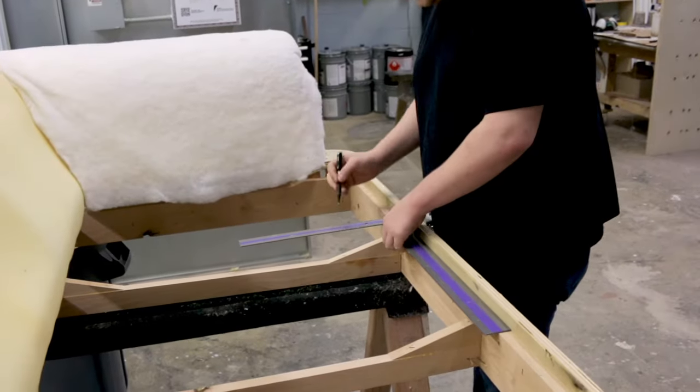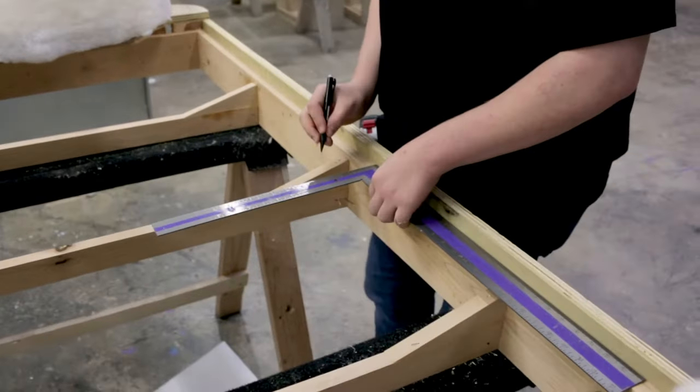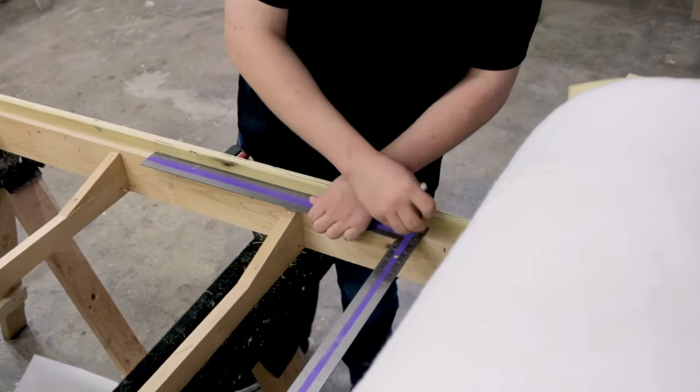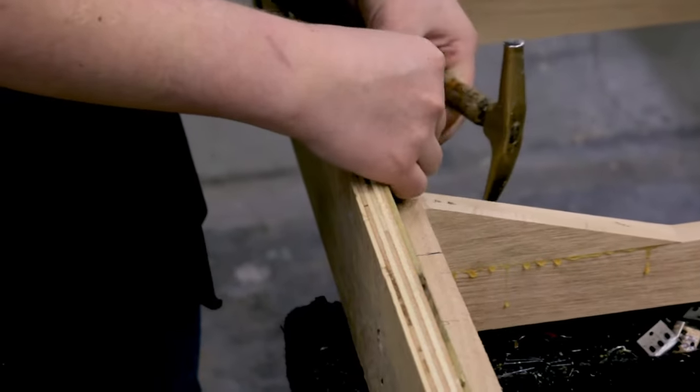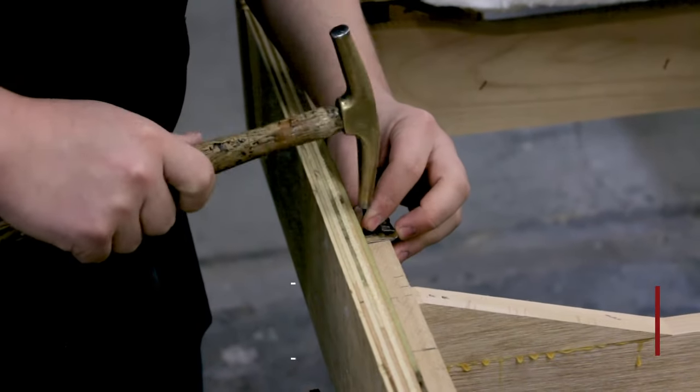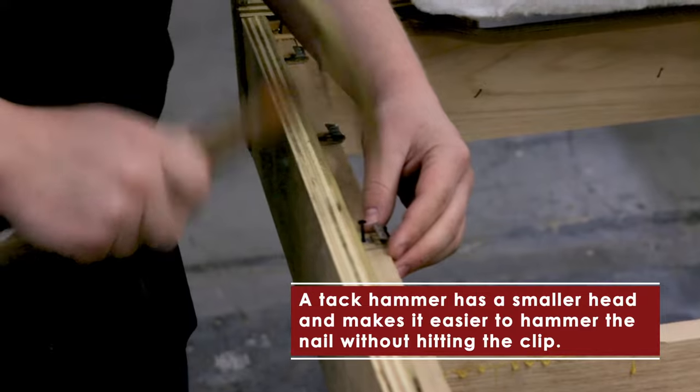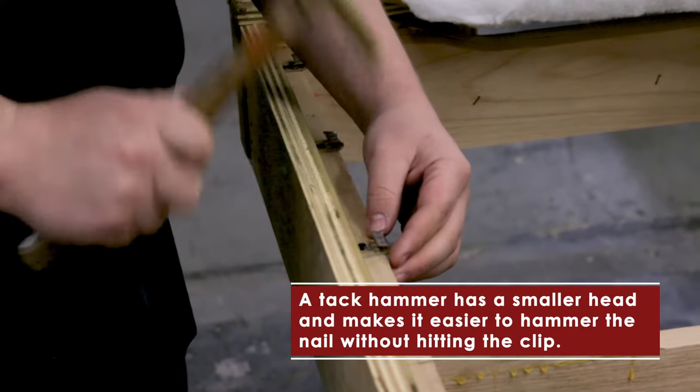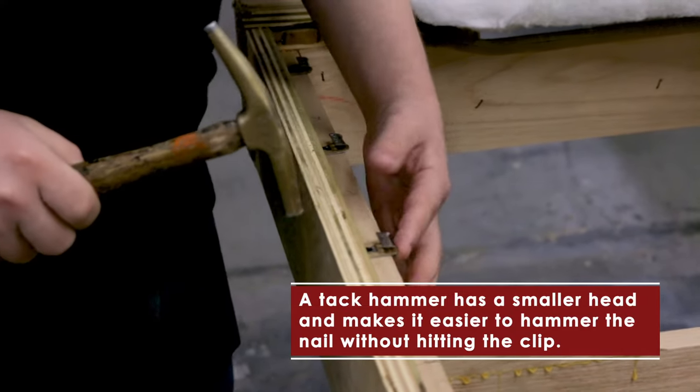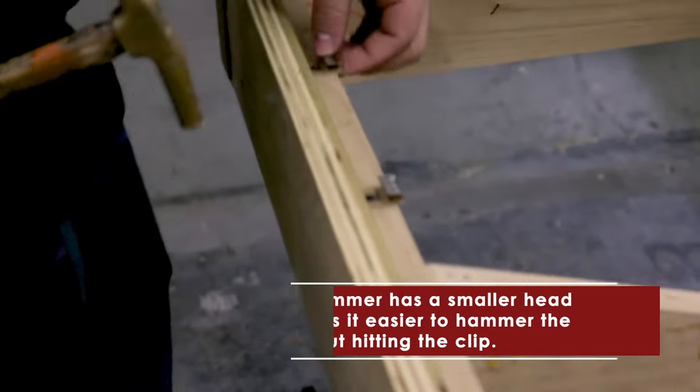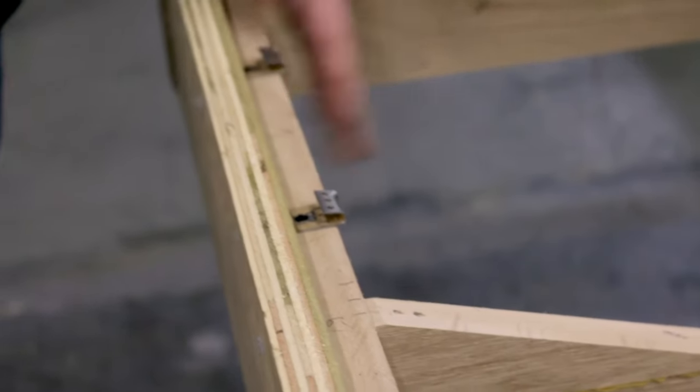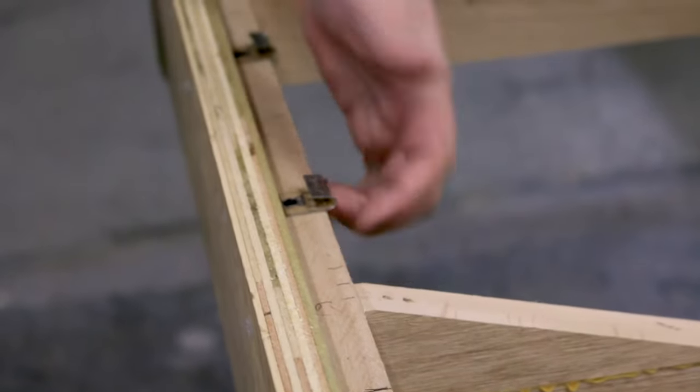Once I've found the best spacing for the springs, I'll go through and mark the spots along the frame with a ruler or a square tool. I'll then nail in the clips right over the middle of my marks. The clips should be just barely hanging over the edge of the frame, maybe about an eighth of an inch.